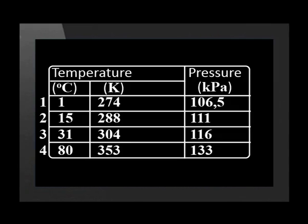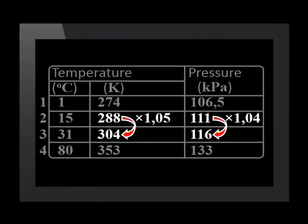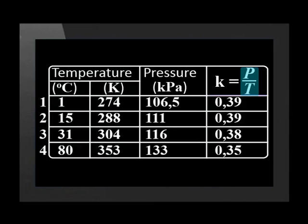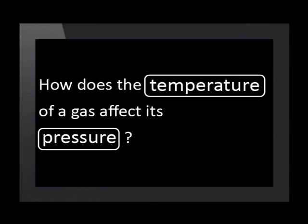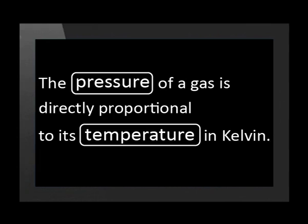Let's go back to the real data Mr. Mashapa's learners got. Remember that when we looked at the patterns in the data, we saw that there was some experimental error. Another way to see this is to calculate P over T for their data — the answers are similar but not identical for the different states. A bit of experimental error is normal in real data. Now remember, we started with a focus question: how does the temperature of a gas affect its pressure? We've seen that the answer is: the pressure of a gas is directly proportional to its temperature in Kelvin. This is sometimes called Gay-Lussac's law.